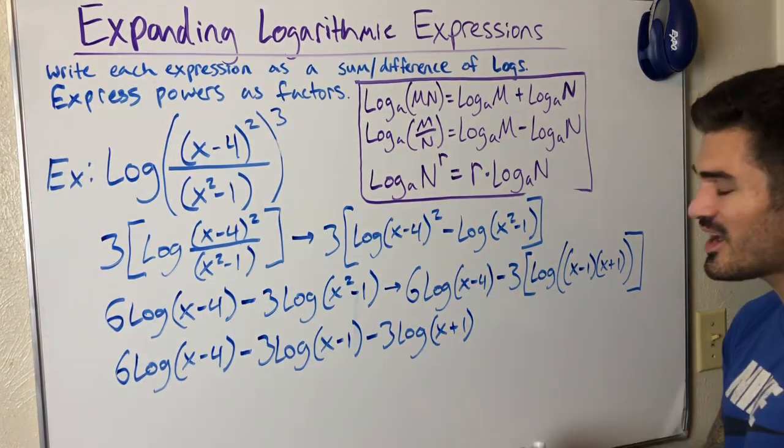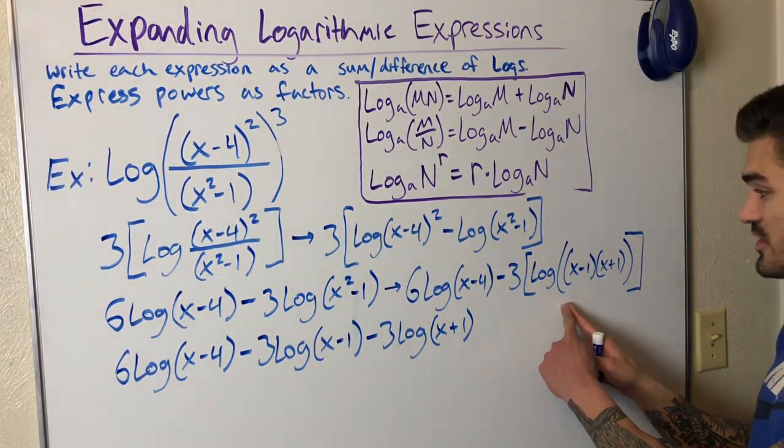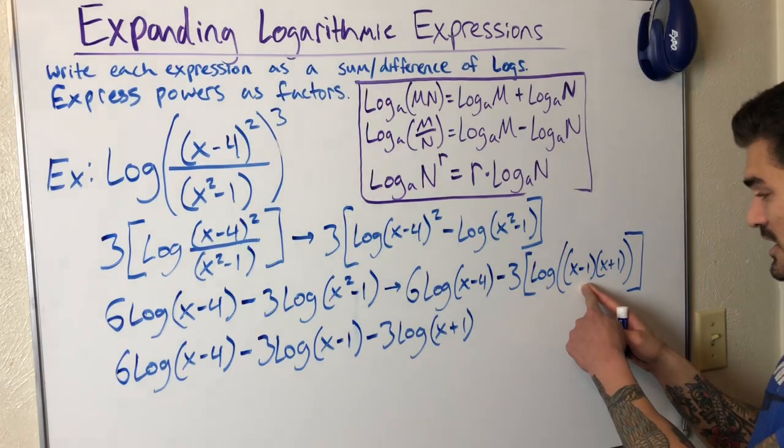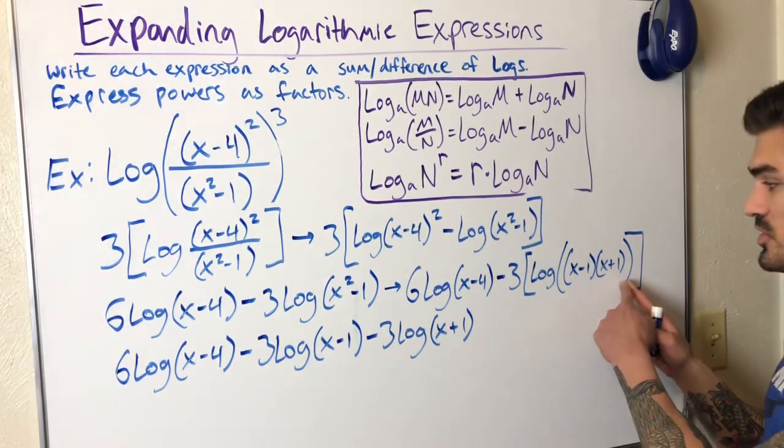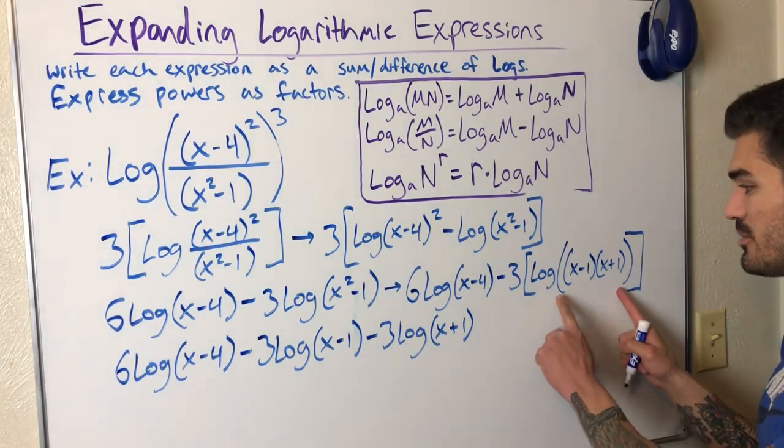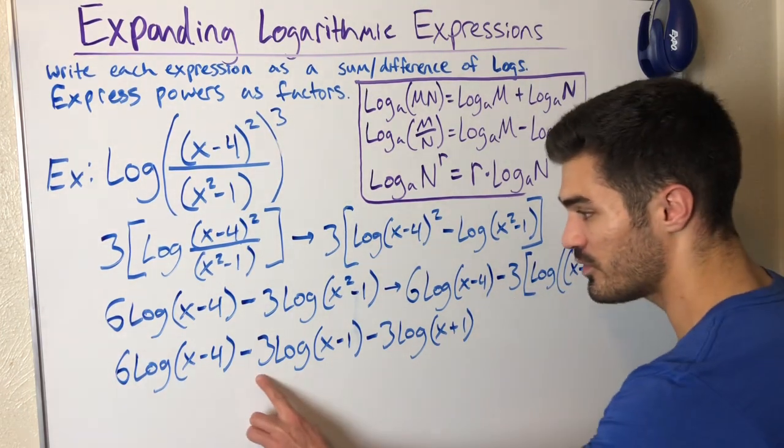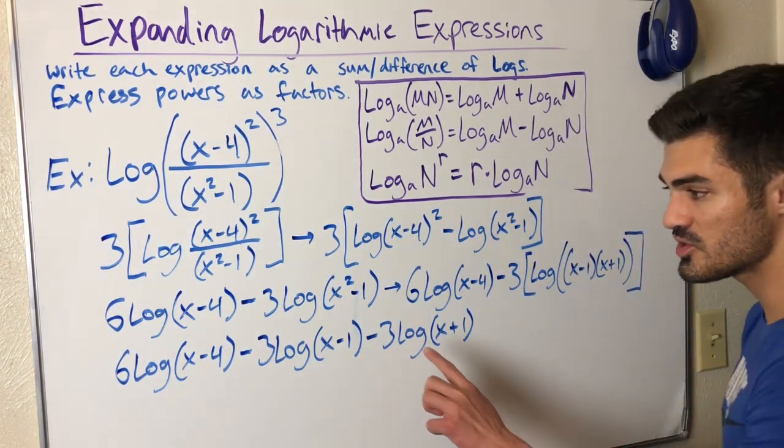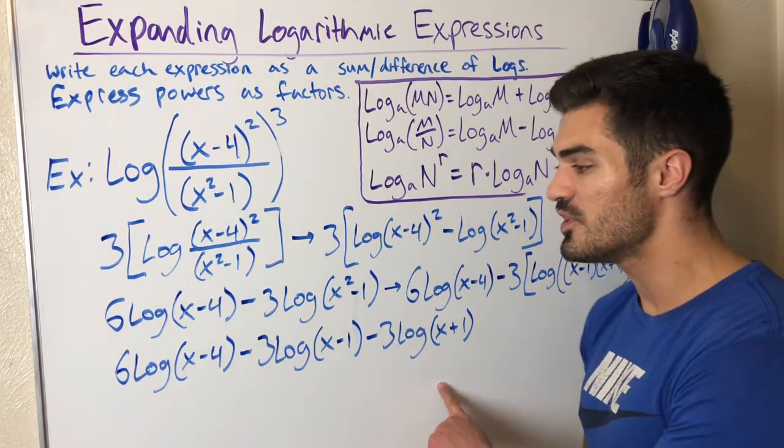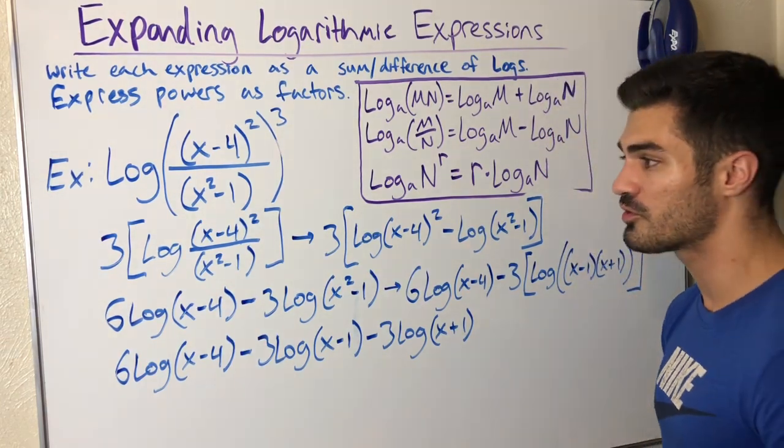Basically, I did kind of two steps at once. I split this up. This was log x minus one plus log x plus one, because I have multiplication, I can split it up into addition. And then this negative three distributed to everything. So the negative three went here, as well as here. So this is good. This is my final expanded form of this logarithmic expression.